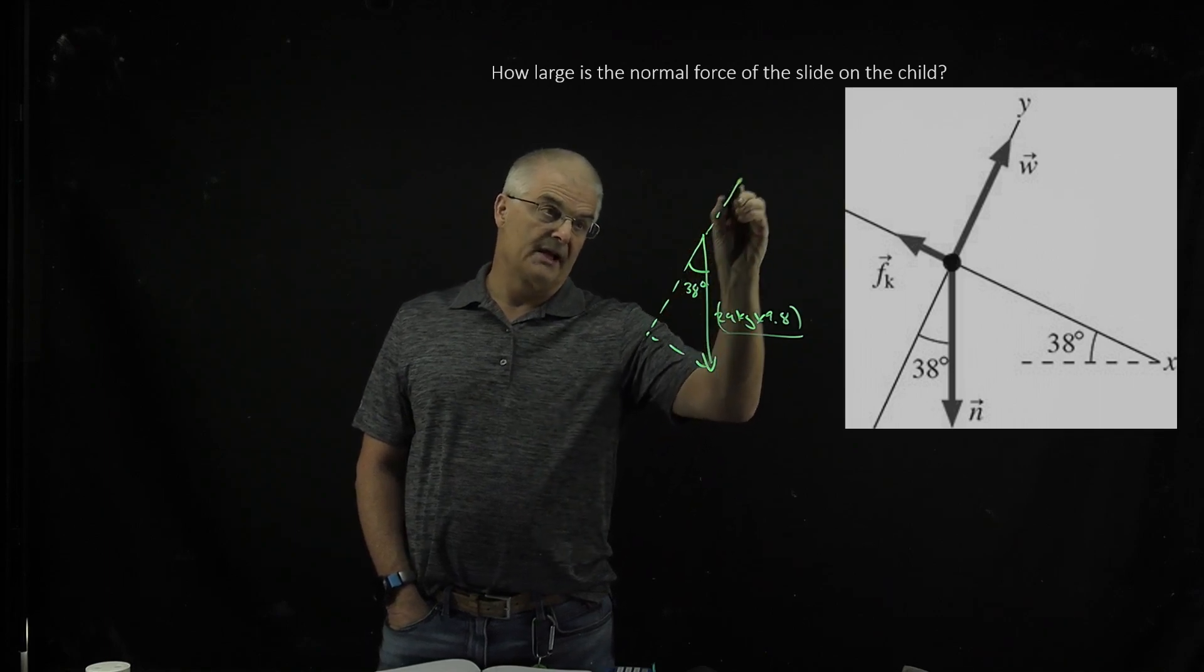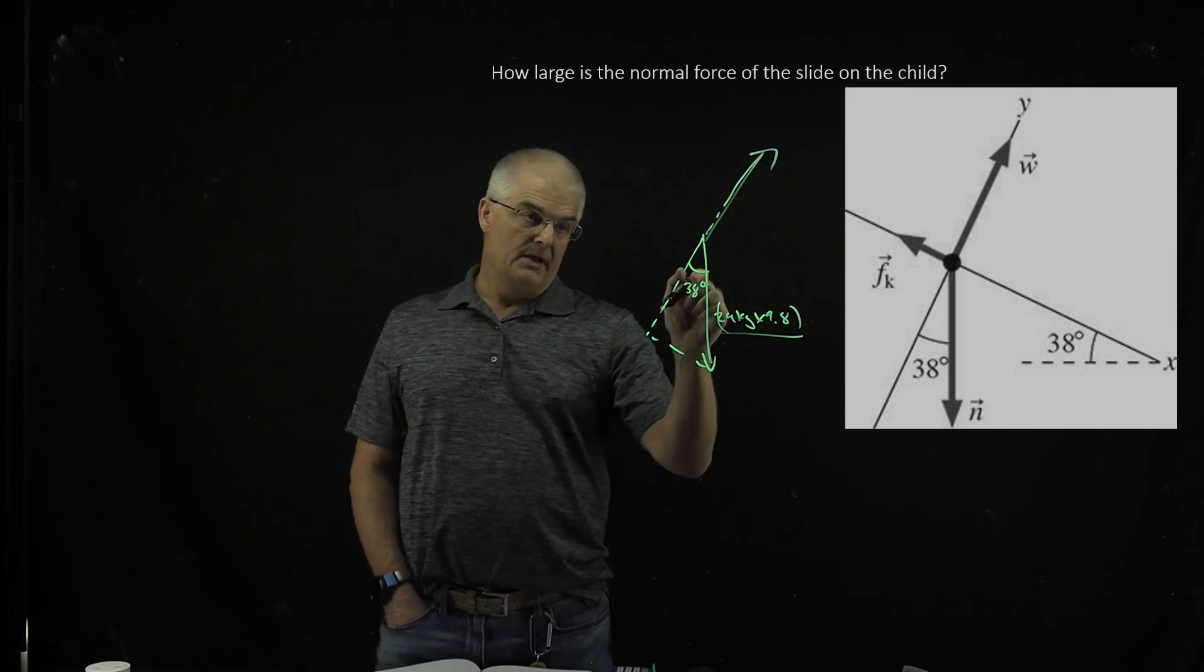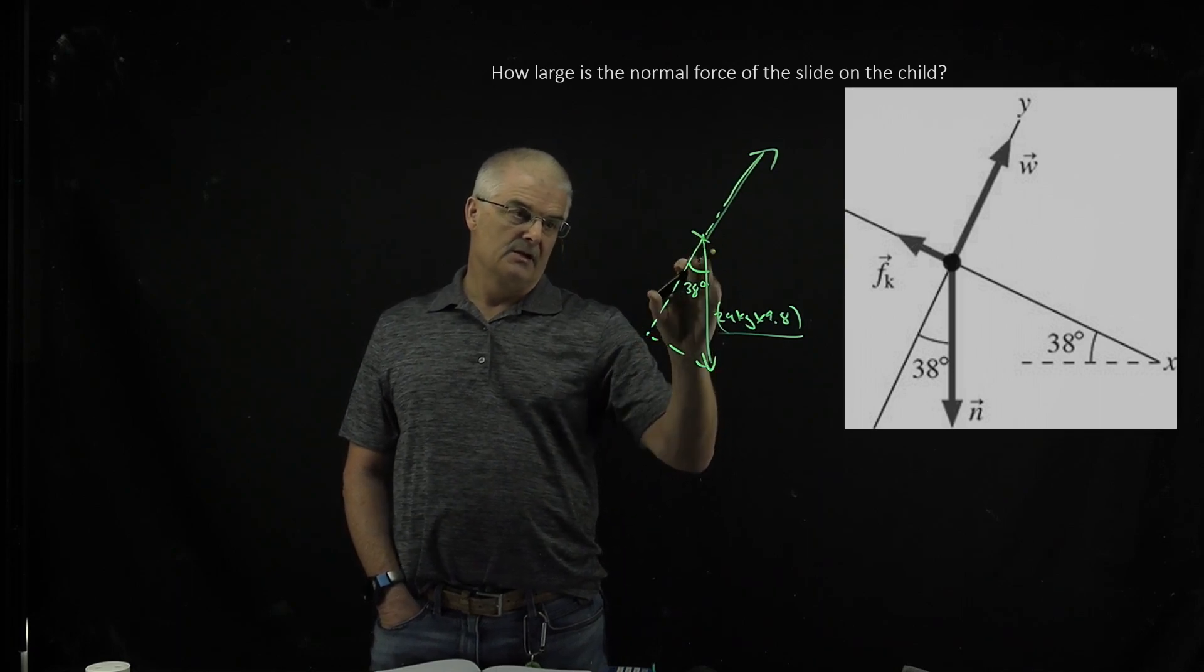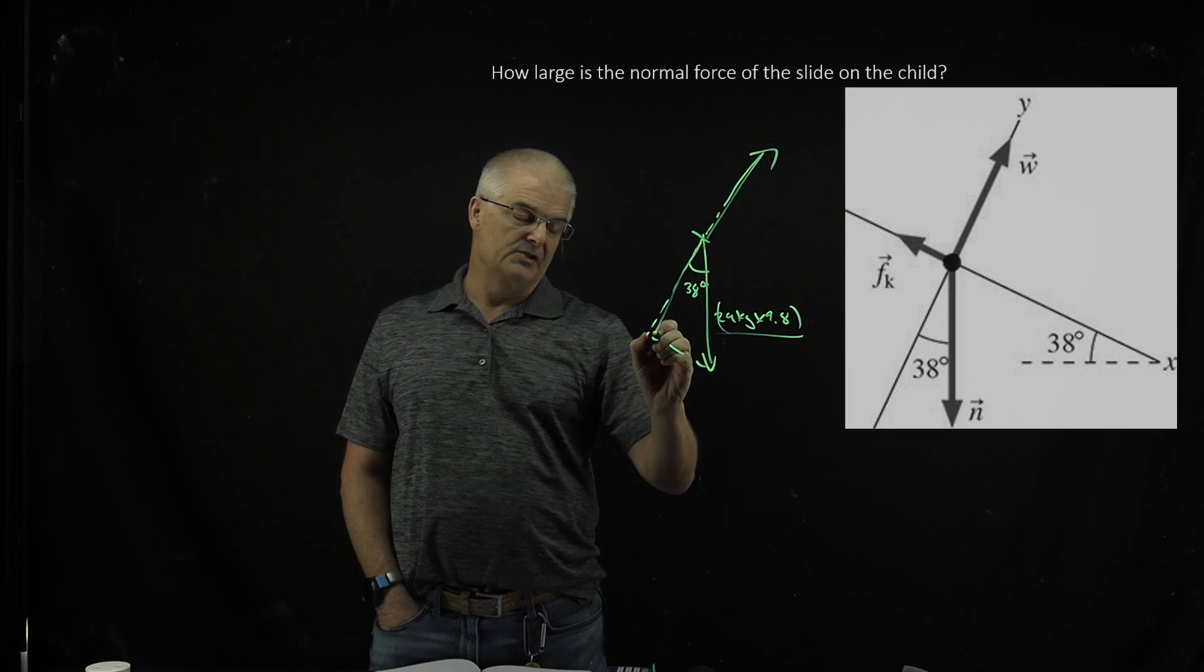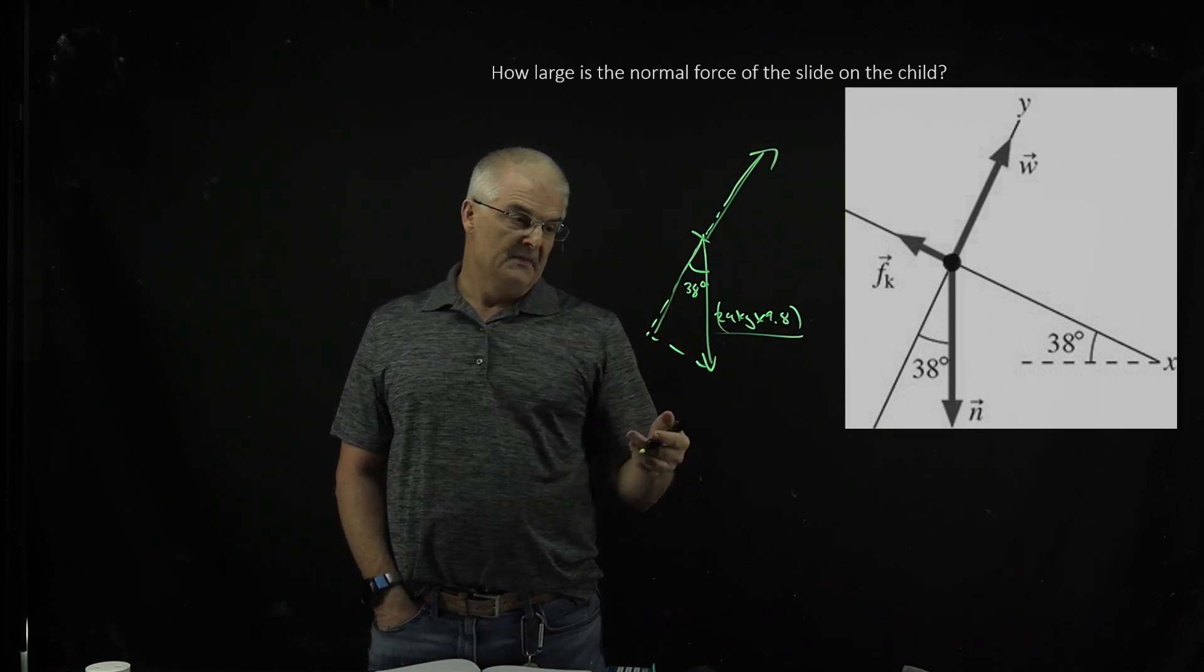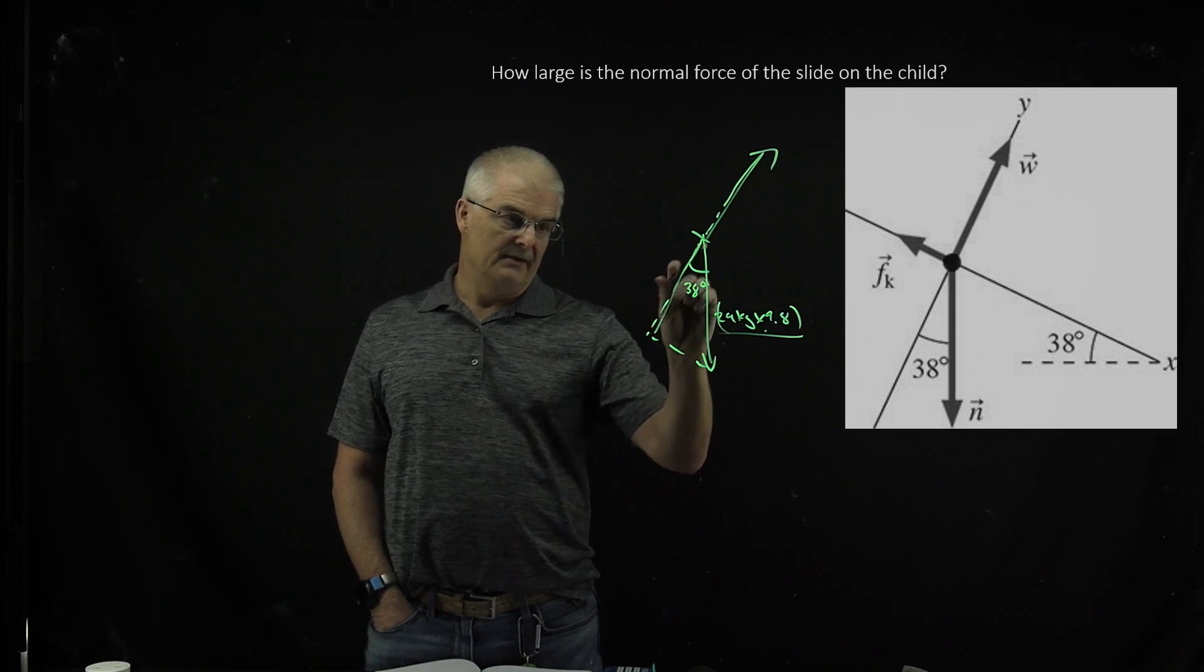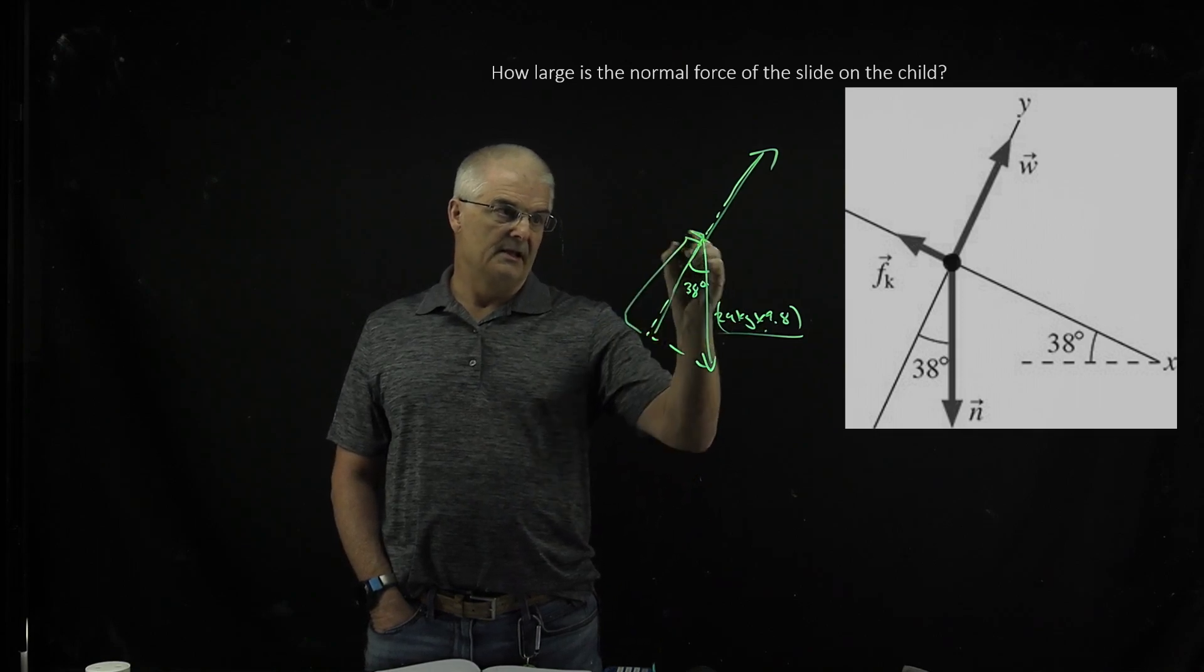You're basically trying, because the normal force is actually this force here, right, but it's equal to the force here that counteracts it. So you're going to find what this line is using trigonometry, 38 degrees, you know what this is, and then you can find what this line is, that line equals this line. That's how you solve the problem.